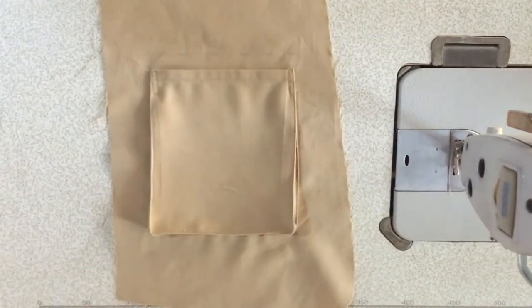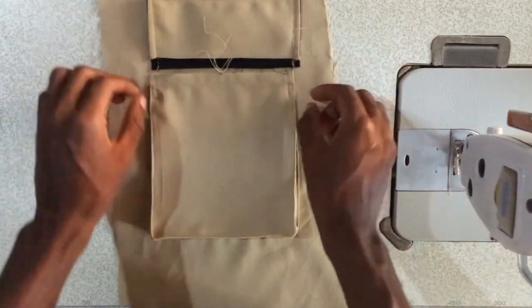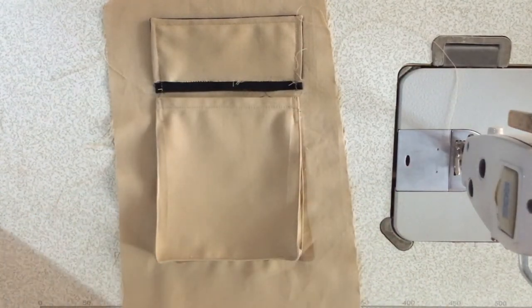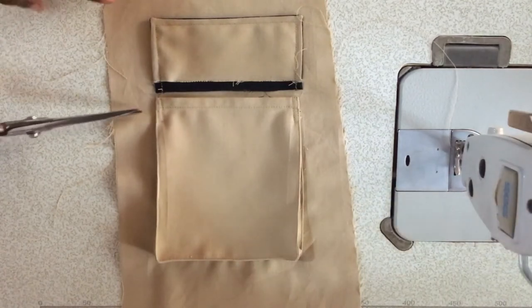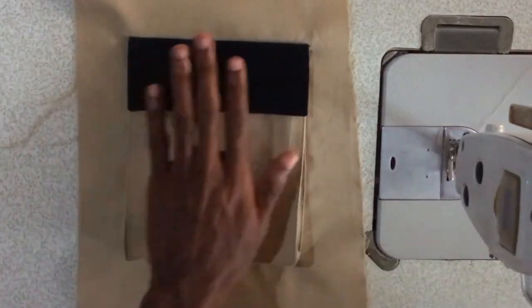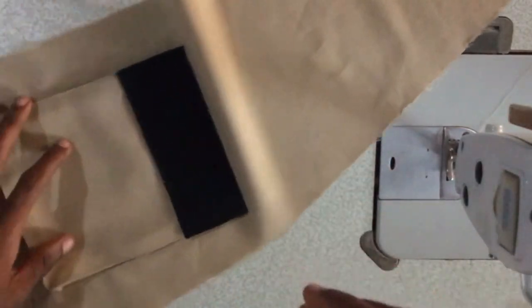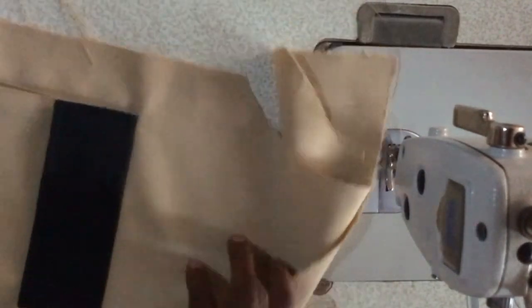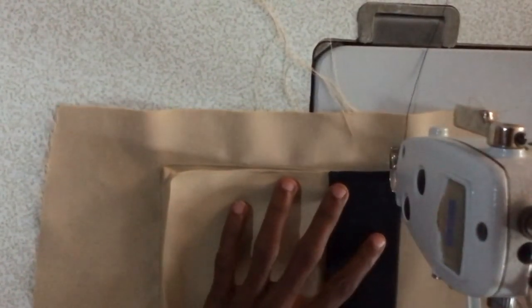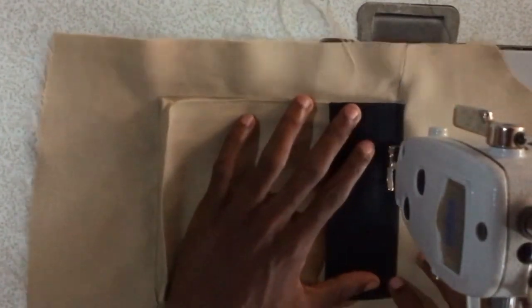To place the flap over the pocket, I measured about one and a half centimeter from the top of the pocket and stitched. After stitching, trim down the excess to about 0.5 centimeter. Turn the pocket flap over, press down and stitch quarter of an inch at the top of the flap.